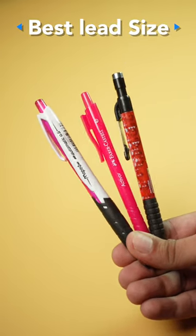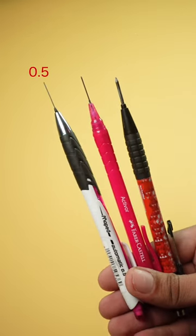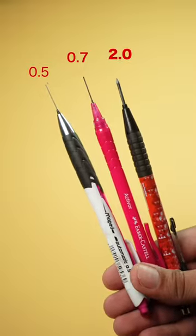In mechanical pencils, it can be confusing choosing the lead. What do you take? 0.5, 0.7, 0.9, or 2mm leads?